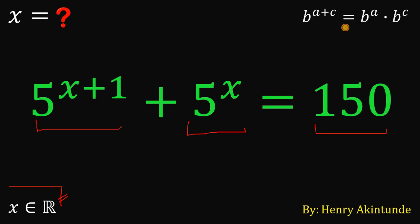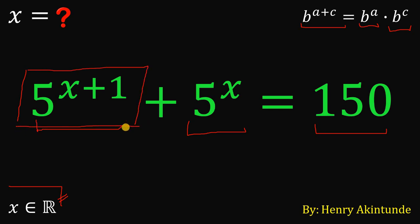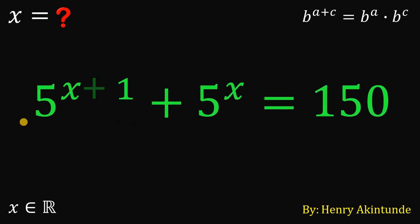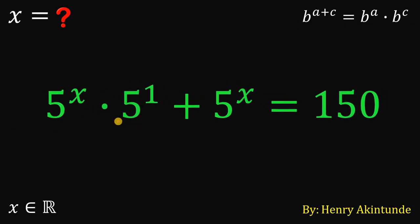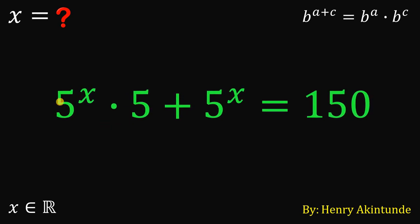Take note: when we have b raised to the power of a plus c, this can be written as b raised to the power of a, multiplied by b raised to the power of c. Therefore, the expression 5 raised to the power of x plus 1 can be written as 5 raised to the power of x, multiplied by 5 raised to the power of 1. And 5 raised to the power of 1 is simply equal to 5.